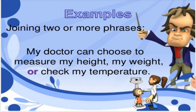Now when does it join two or more phrases? My doctor can choose to measure my height, my weight, or check my temperature. We see the conjunction used here is OR and it is joining three phrases: my height, my weight, and check my temperature. I hope all of you know what phrases are. You can refer to my videos for a detailed description of phrases and clauses.